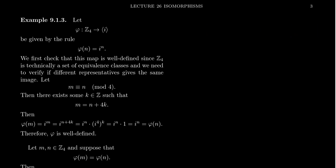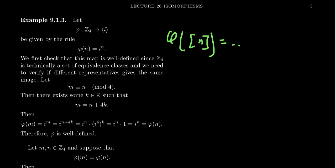We define the function phi from Z₄ to the cyclic group generated by i as phi of n equals i to the n. Notice I'm defining the function on representatives of Z₄, not on the classes themselves — this is a critical distinction. It raises the question: is this map even well-defined? What if we pick two different representatives of the same congruence class?